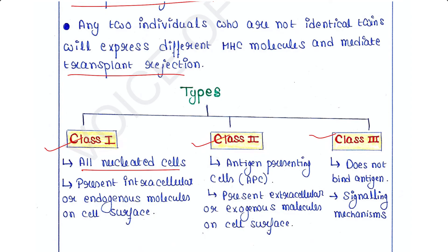Class 2 molecules are not found in all nucleated cells. They are present only in some special cells known as APCs or antigen-presenting cells — these are B cells, macrophages, and dendritic cells. Class 1 MHC molecules present intracellular or endogenous molecules on the cell surface, whereas class 2 MHC molecules present extracellular or exogenous materials on the cell surface.